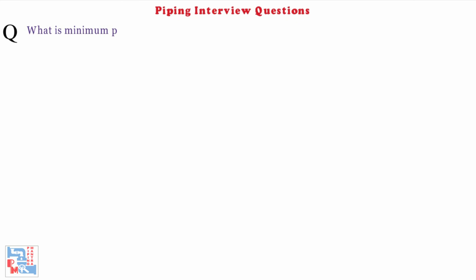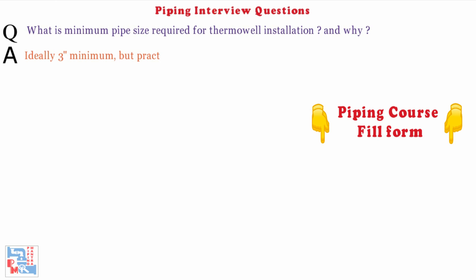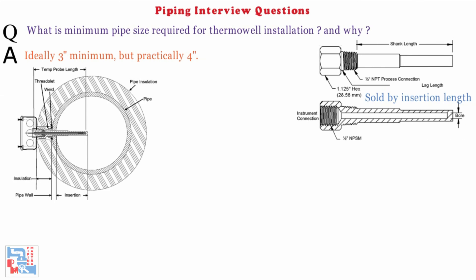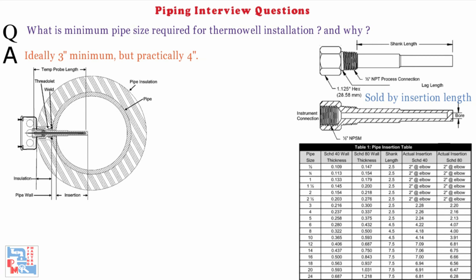Question 1: What is the minimum pipe size required for the thermowell installation and why? Ideally 3 inches minimum but practically 4 inches. Because thermowells are sold by insertion lengths, which is the length of the thermowell inside the pipe. The right length for a thermowell largely depends on the diameter of the pipe or tube. One rule of thumb is to insert a thermowell anywhere from 1/3 to 2/3 of the way into the fluid stream.